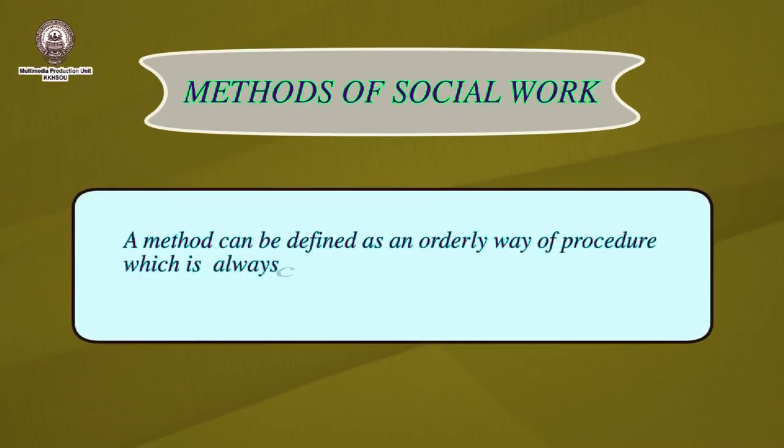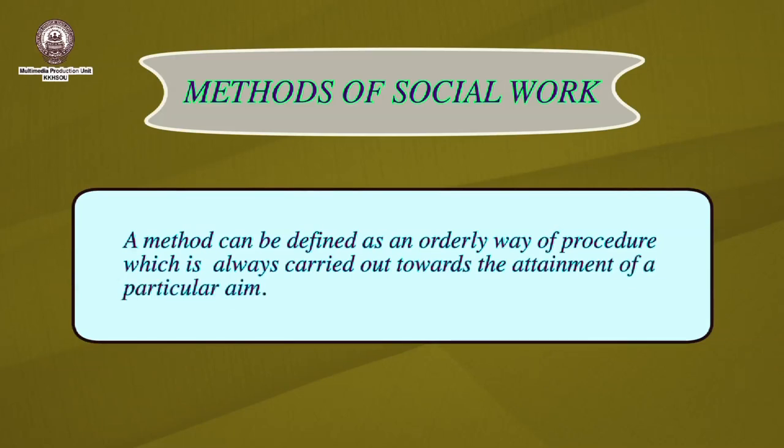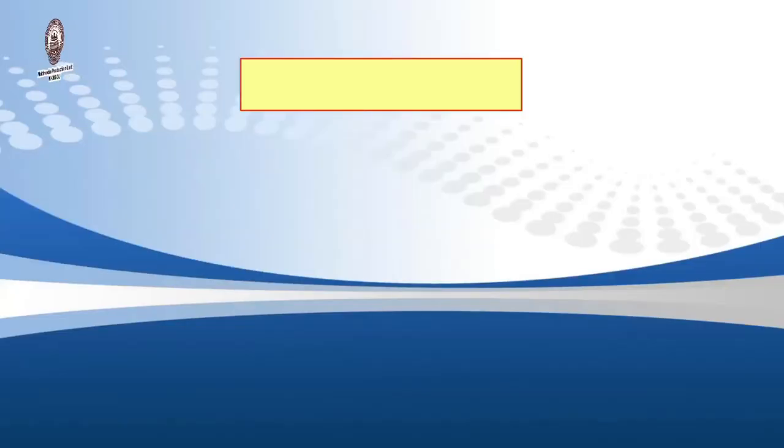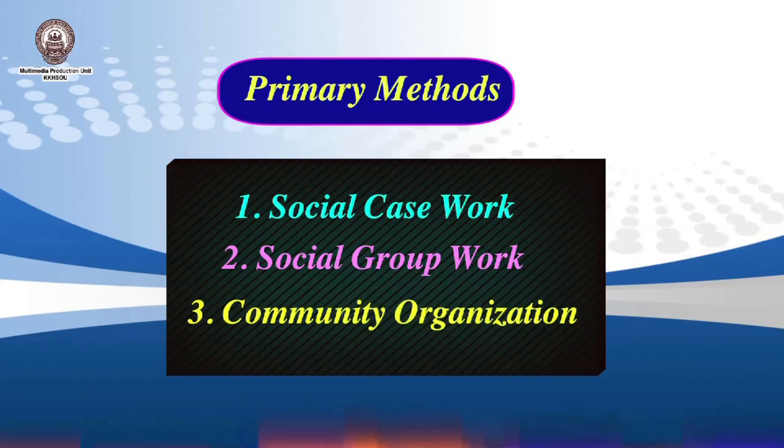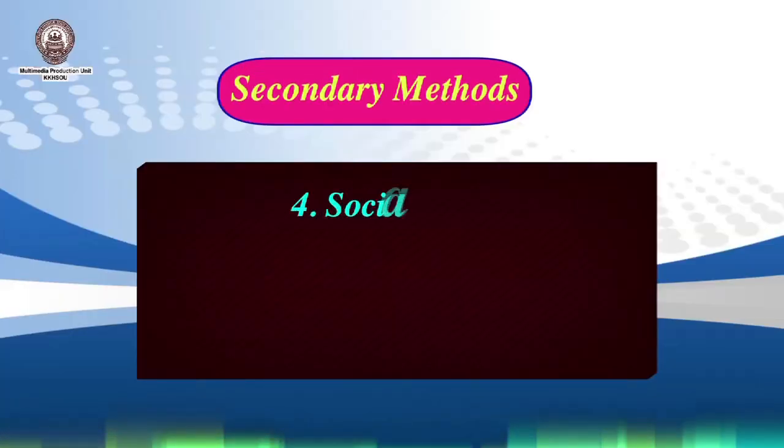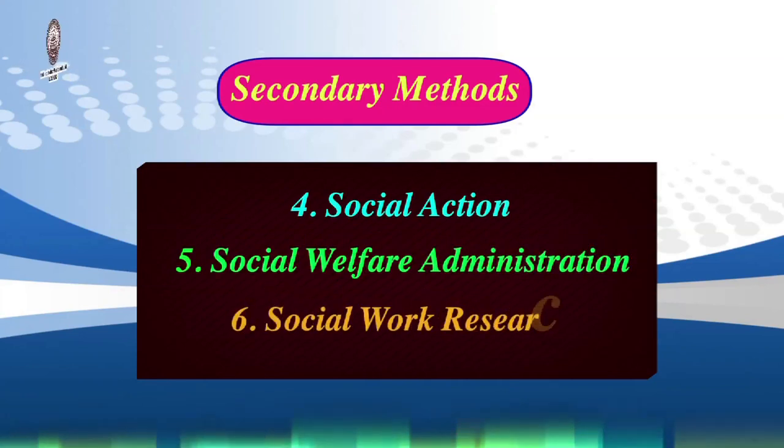A method can be defined as an orderly way of doing certain things or an orderly procedure in which things are carried out with a particular aim. As discussed in the objectives of social work, it is mainly to deal with humanitarian needs and provide social justice to society. Keeping that objective in mind, there are six methods in social work — three primary methods and three secondary methods. Each method uses different therapeutic models or strategies to deal with social issues. The three primary methods are social case work, social group work, and community organization. The secondary methods are social action, social welfare administration, and social work research.